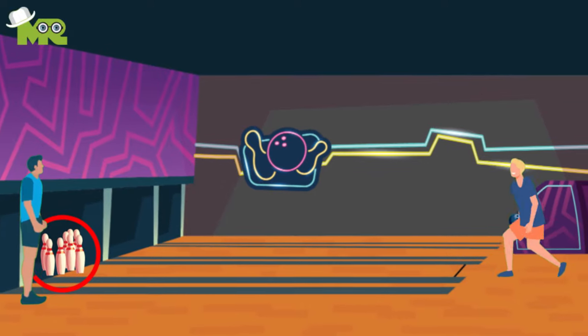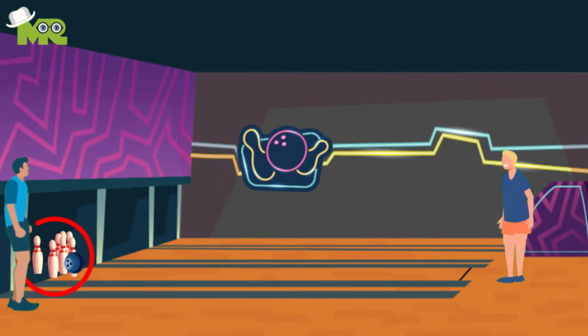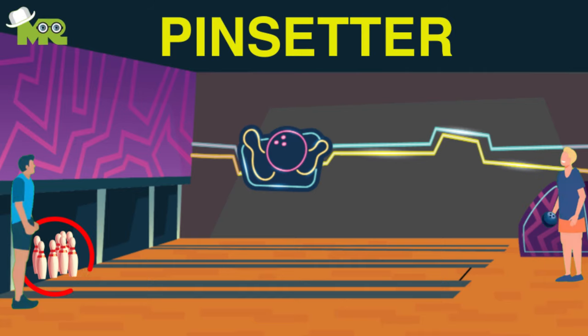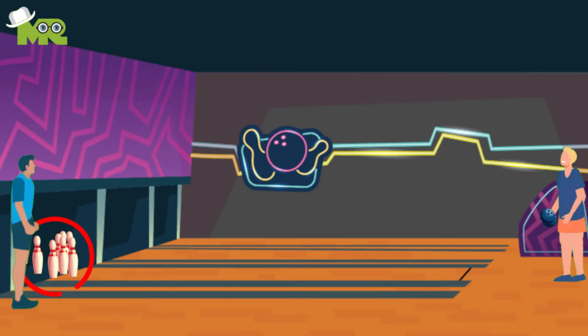If the player notices that some of the pins are missing from the setup while delivering the ball. In case a human pin setter interferes and removes any of the pins before the player has rolled the ball, or before the ball reaches the pins.